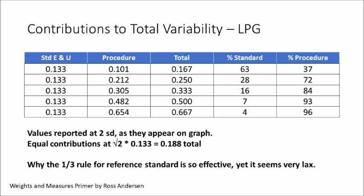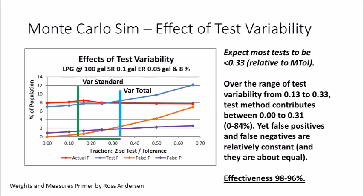Coming back to our graph, I've added a green line along the bottom to mark our area of interest. What we see is that the variability doesn't seem to affect the false positives and false negatives — it's almost a flat line. We're seeing something like 96% to 98% effectiveness of the test. Even with huge changes in test variability, we see very little change in outcomes. This shows why testing is so effective and used by organizations like AOAC, ASTM, IEEE, and OIML weights and measures.